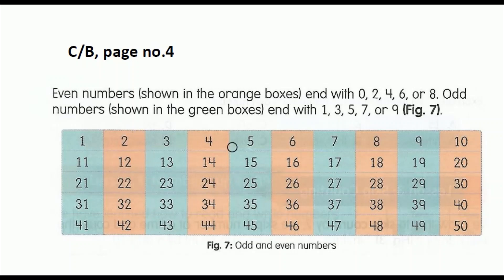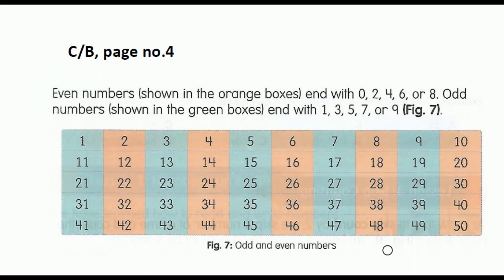In this box, all the numbers end with the number 4, so all these numbers are even numbers. Here it is ending with 8, so all these numbers are even numbers. Here all the numbers end with 0, so we can say that all these numbers are even numbers.